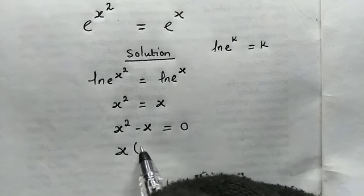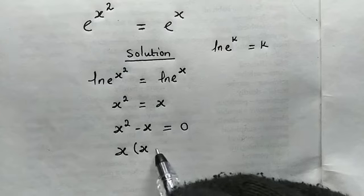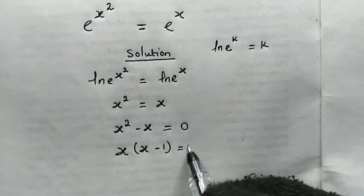From here we factor out x and we're left with x squared divided by x which is x, then negative x divided by x is negative 1, and this is equal to 0.